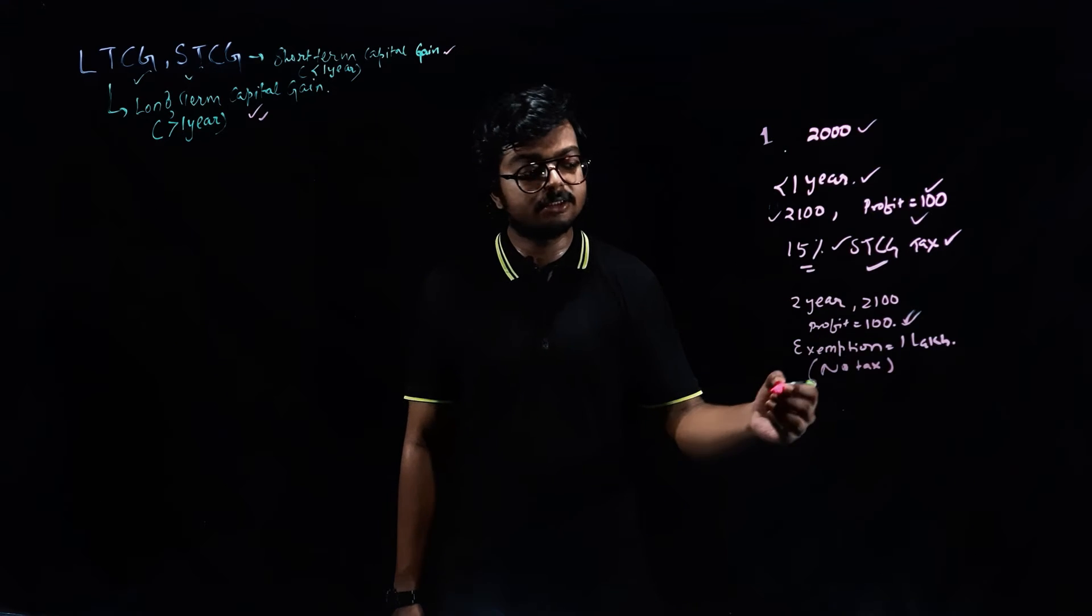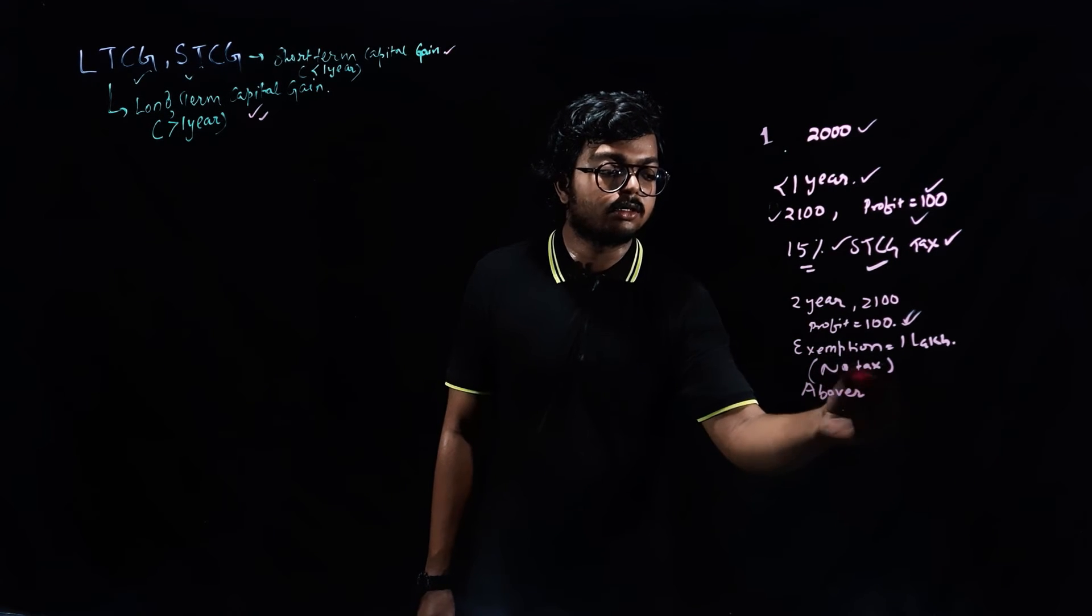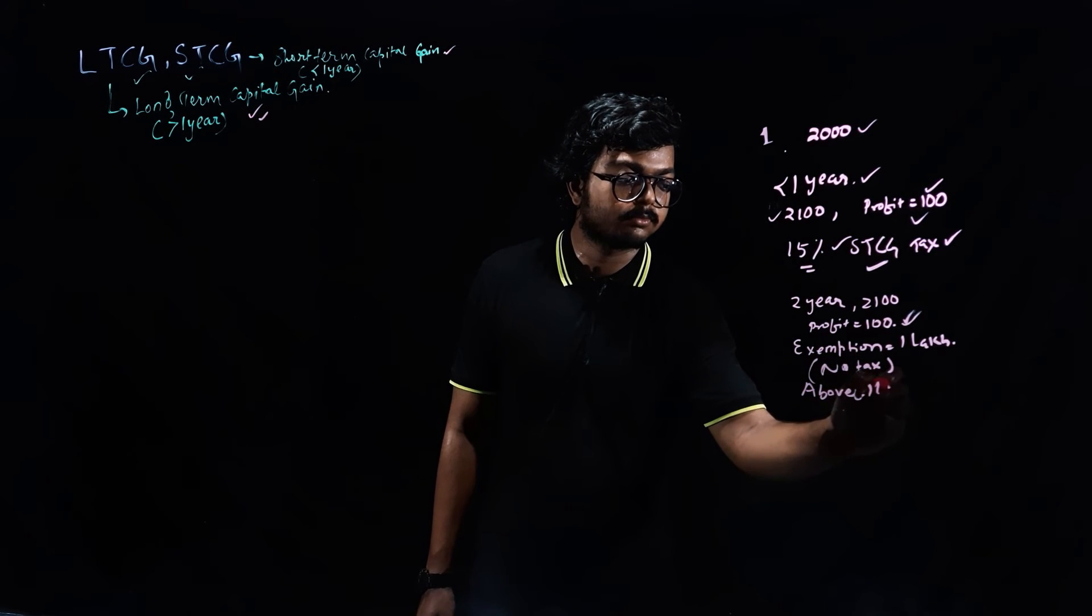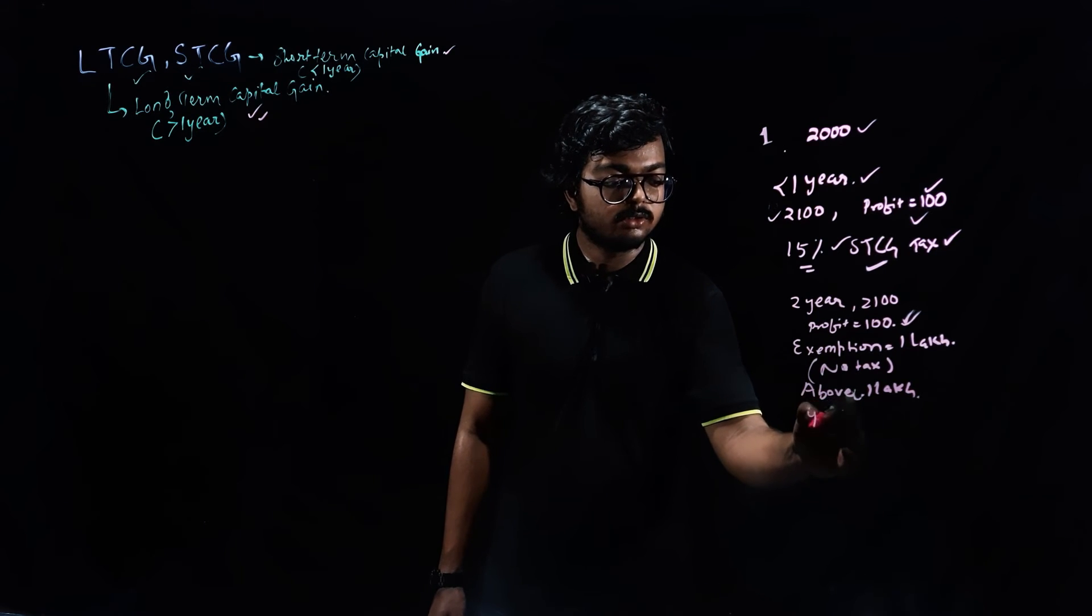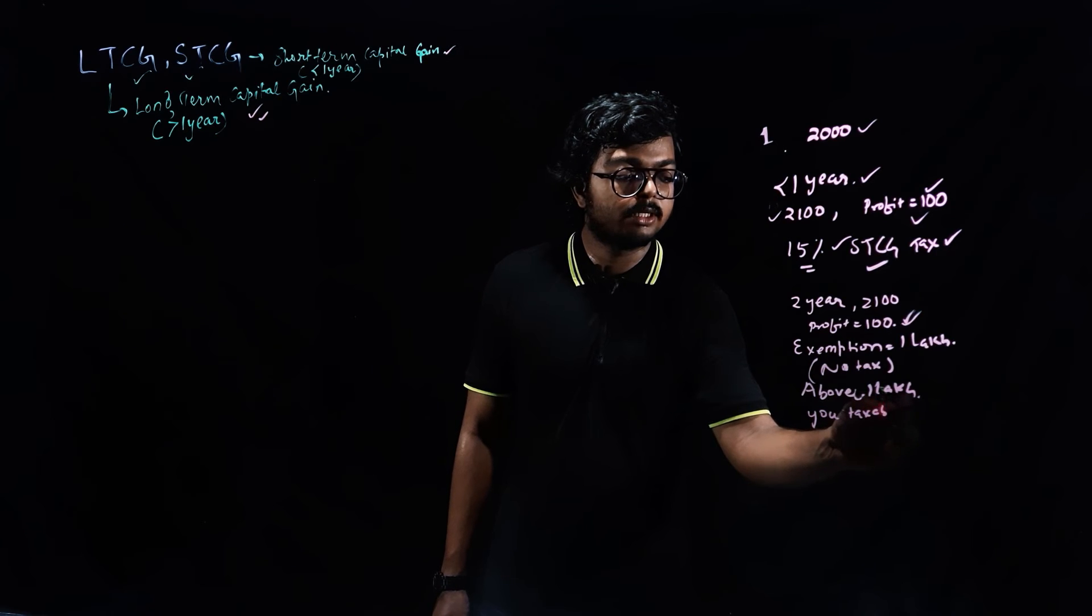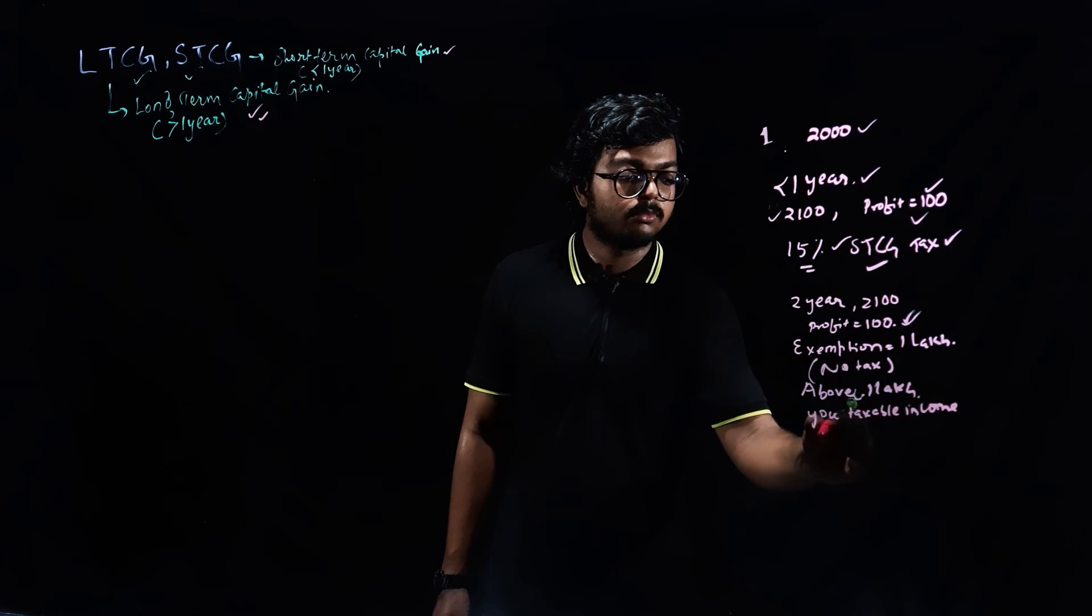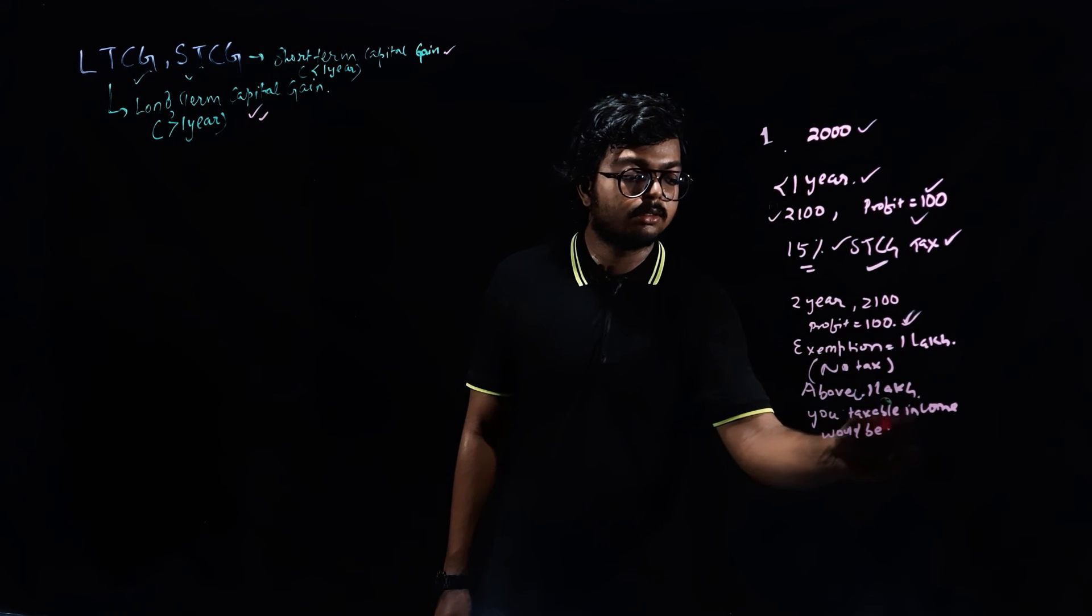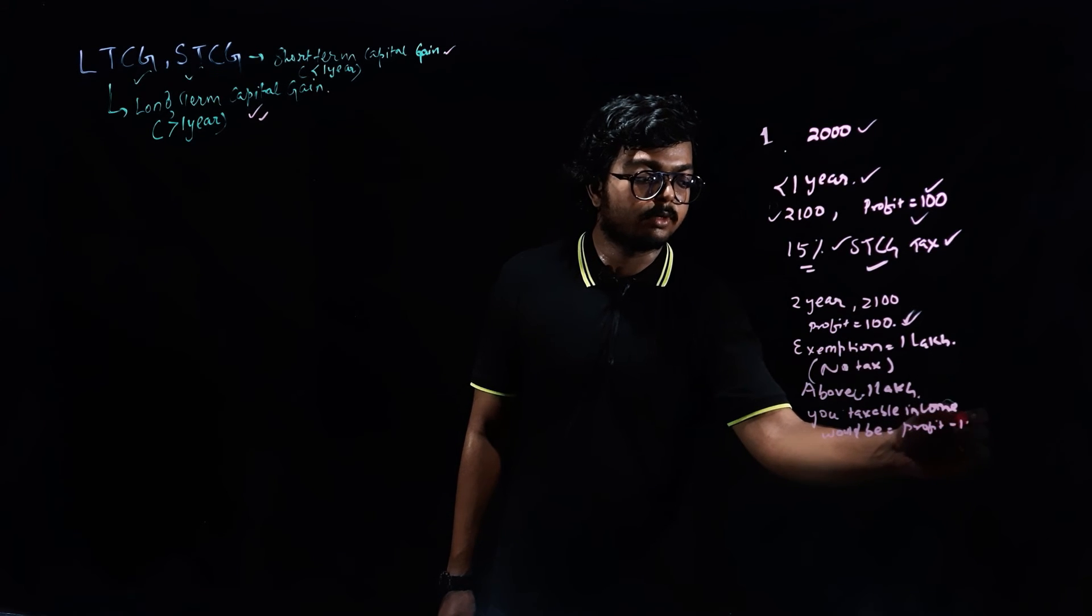So, if your profit is above one lakh rupees, above one lakh, say for example, your profit crossed above one lakh rupees. Then in this case, your taxable income would be your profit minus one lakh rupees.